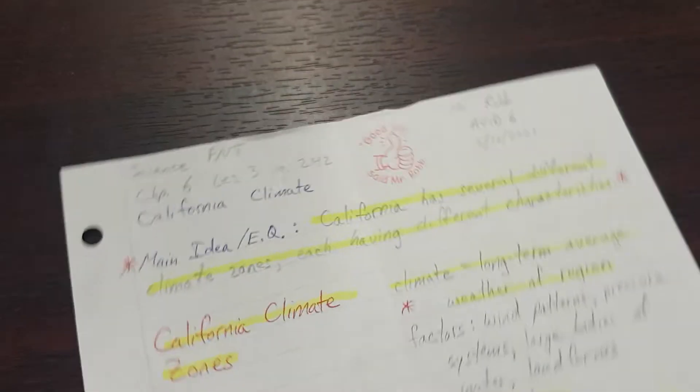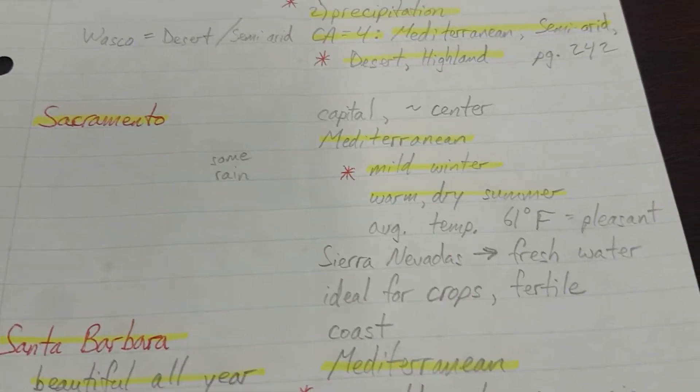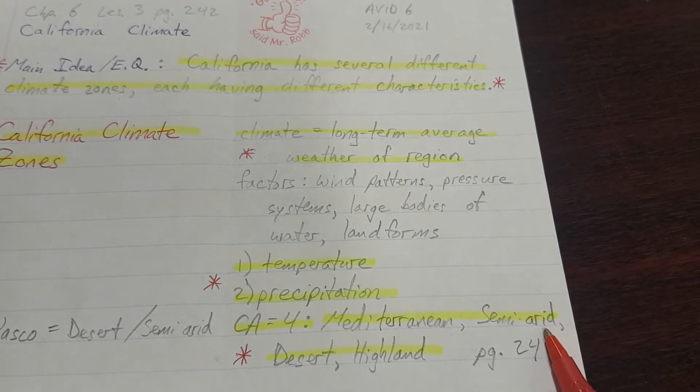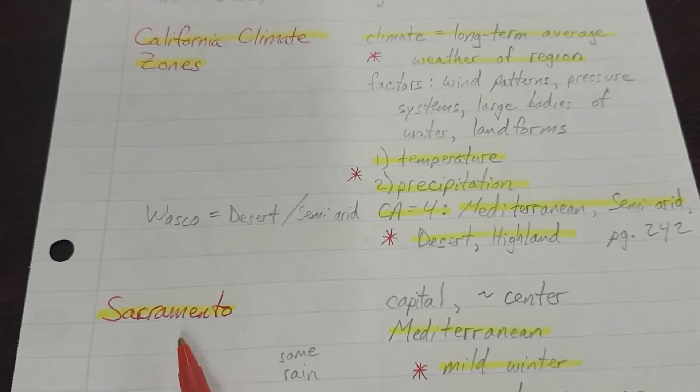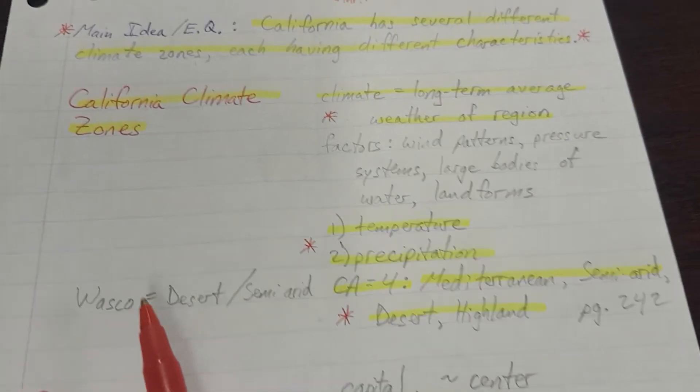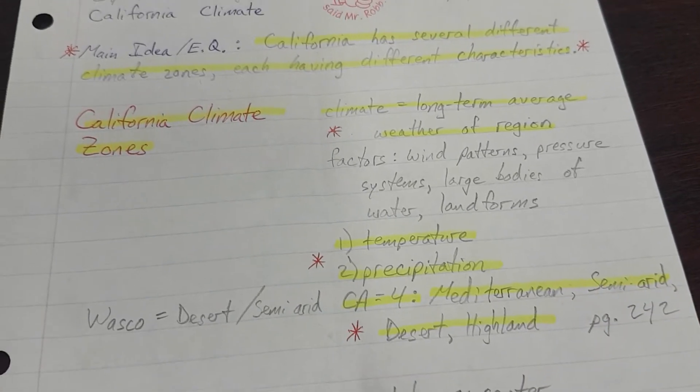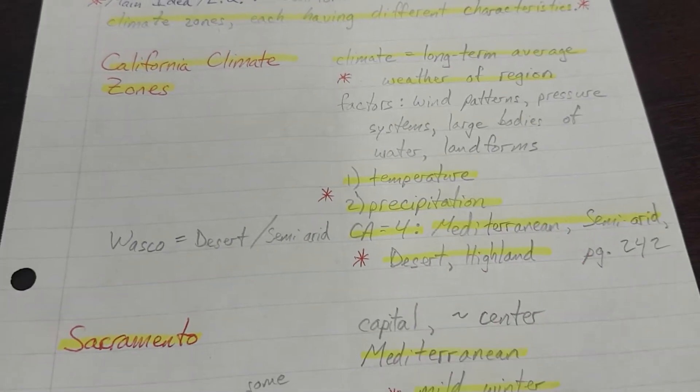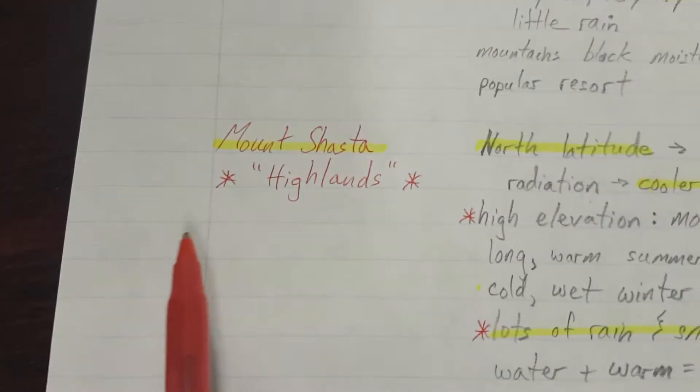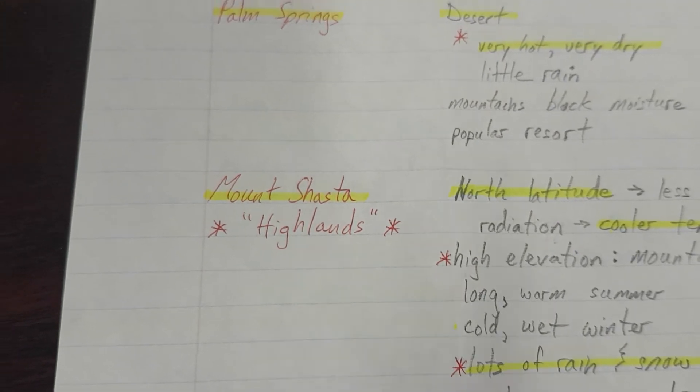Notice they gave us the four examples. Mediterranean, Sacramento, but also Santa Barbara. They did not give us an example of semi-arid. Sacramento is almost getting there, but I would say like Wasco, Bakersfield, Modesto, all the places up and down the Central Valley, we are semi-arid. Desert was Palm Springs. And Highland, their example was Mount Shasta.